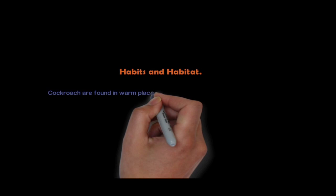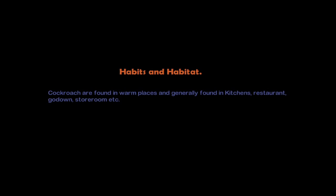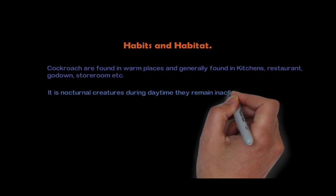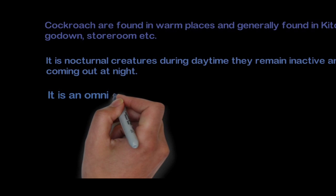Habits and Habitat: Cockroaches are found in warm places and are generally found in kitchens, restaurants, godowns, storerooms, etc. They are nocturnal creatures. During the day they remain inactive and in hiding, coming out at night. They are omnivorous animals and scavengers.